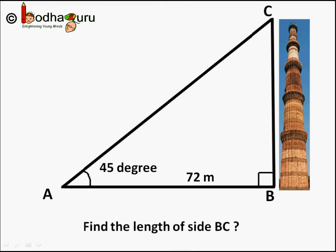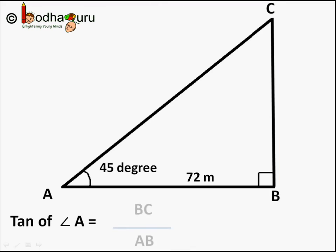So angle A is 45 degrees, AB is 72 meters and we need to find BC. So how do you do that?